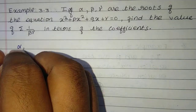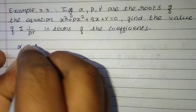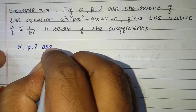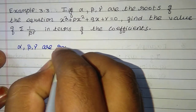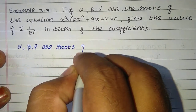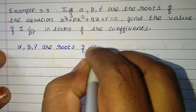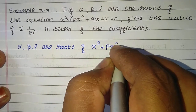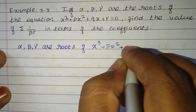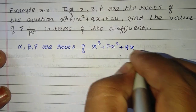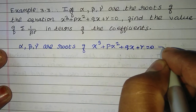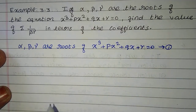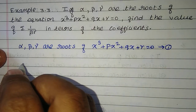Given: alpha, beta, gamma are the roots of x³ + px² + qx + r = 0. This is equation 1.